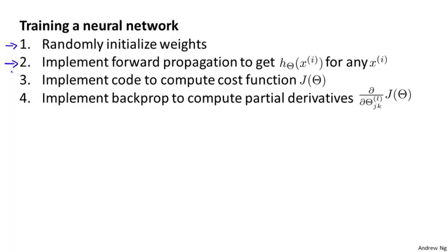Then we implement forward propagation so that we can input any x to the neural network and compute h(x), which is the output vector of the y values. We then also implement code to compute the cost function J(θ). Next, we implement backpropagation — the backpropagation algorithm — to compute the partial derivative terms, that is, the partial derivatives of J(θ) with respect to the parameters.